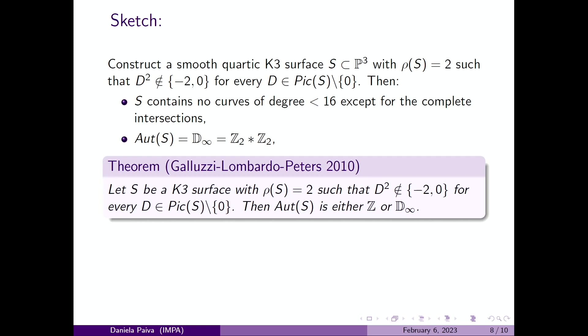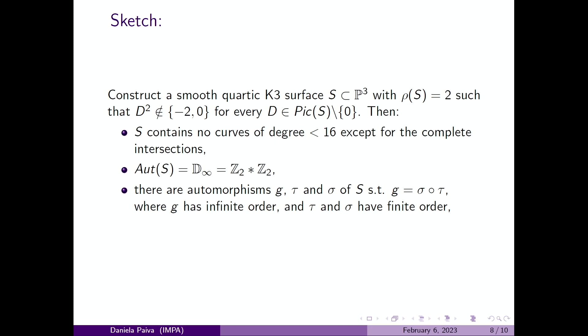To prove this, we use this theorem given by Galluzzi, Lombardo, and Pedrini that says that with this condition on our S, the automorphism group is either ℤ or ℤ∞. To prove that in fact it is ℤ∞, we find a finite automorphism of the surface. In fact, we find three automorphisms g, τ, and σ, such that g is this composition here. g has infinite order and τ and σ have finite order.